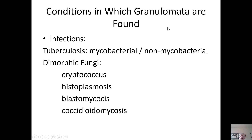There are a variety of conditions in which granulomata can be found: infections, mycobacterial and non-mycobacterial tuberculosis, and dimorphic fungi. In the following sections I will specifically address four types of dimorphic fungi, but there are others which also form granulomata: cryptococcosis, histoplasmosis, blastomycosis, and coccidioidomycosis.